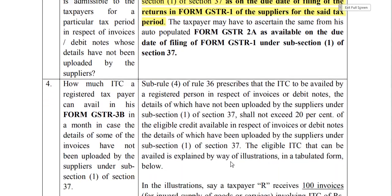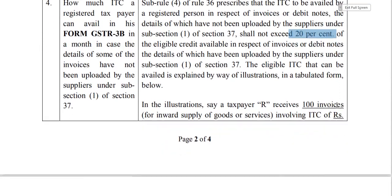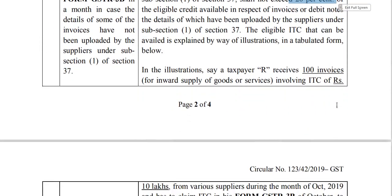The fourth question: how much ITC can a registered taxpayer avail in GSTR-3B for a month when details of some invoices have not been uploaded by the supplier? The answer: you cannot get more than 20% of the eligible credit reflected in GSTR-2A. The circular provides some illustrations to explain this.